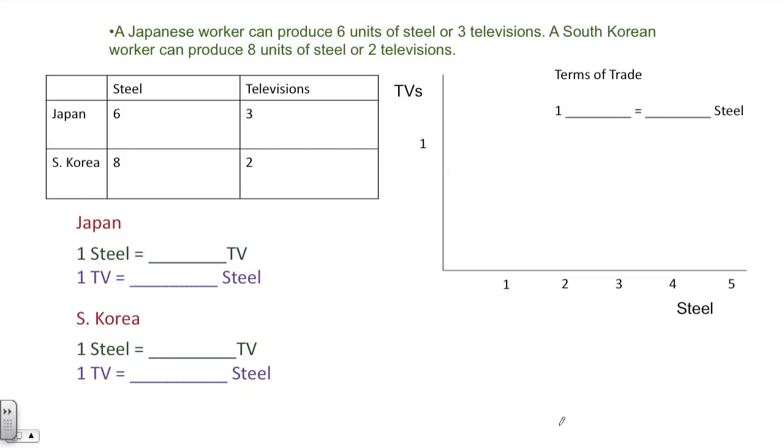For this problem, we will be looking at two countries and their production of two products. As we solve this problem, we'll look at the comparative advantage between these two countries, the terms of trade as they choose to trade one good for another, and as they specialize in producing one product, how they gain from trade.